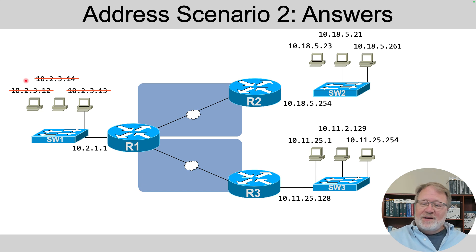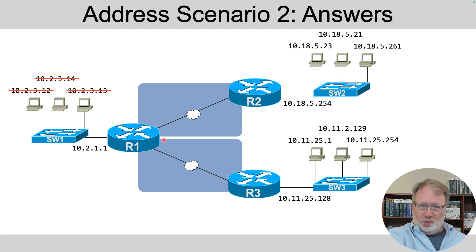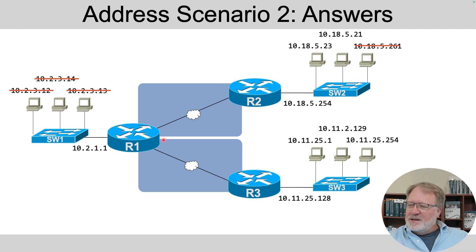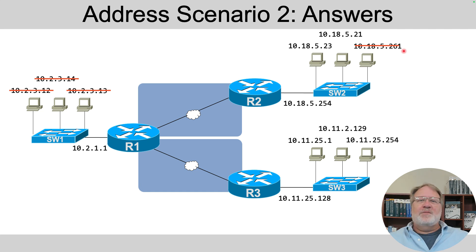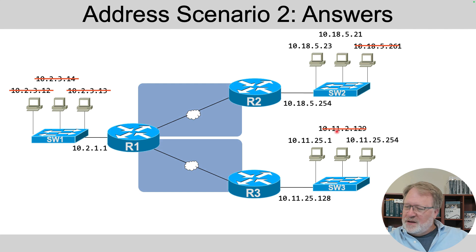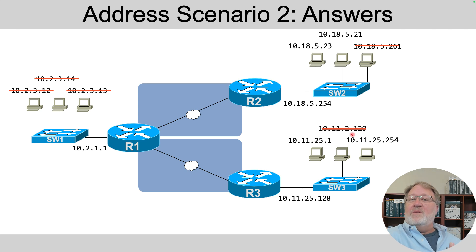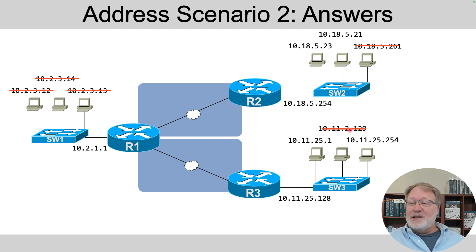Those hosts can't communicate through R1 to the rest of the network because addressing rules have to work for routing to work. Over at R2, 10.18.5.254 is the router address. 10.18.5 matches up, but the PC address shows 261, which is simply out of range — you can't have a number outside 0–255 in any octet. For R3, 10.11.25.128 is legal on the router, but a PC shows 10.11.2 instead of 25 in the third octet — probably a typo — so the first three octets don't match.